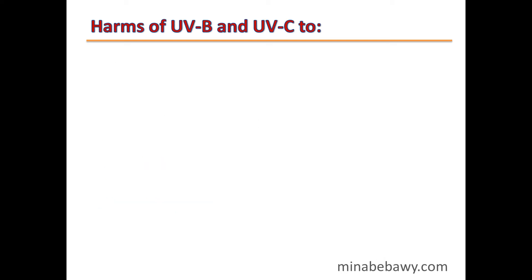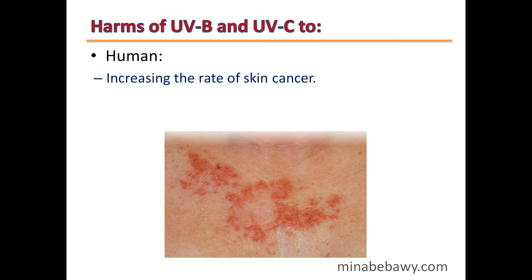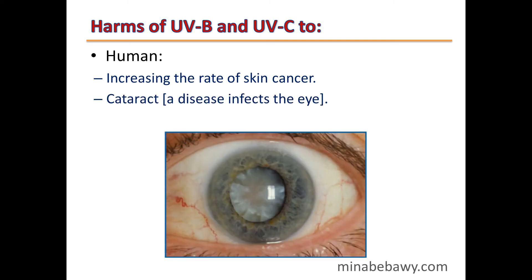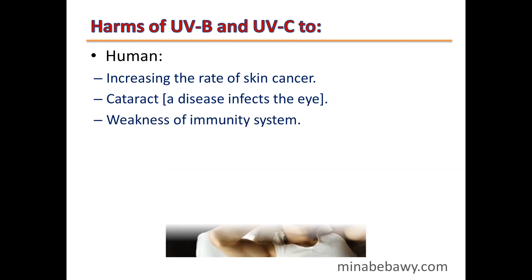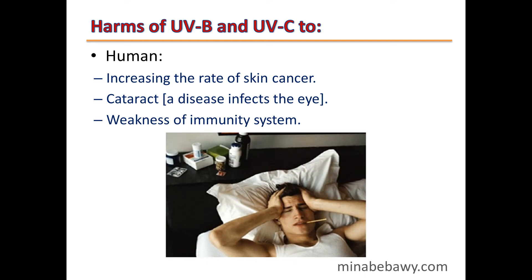Harms of UVB and UVC to humans: the first harm is increasing the rate of skin cancer; the second is cataract, which is a disease that infects the eye; and finally, weakness of the immunity system, so the human body becomes weak.